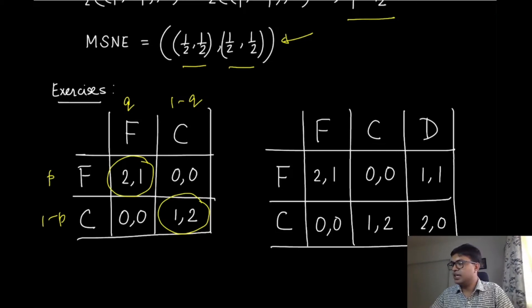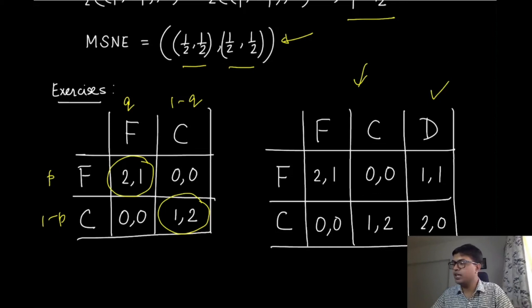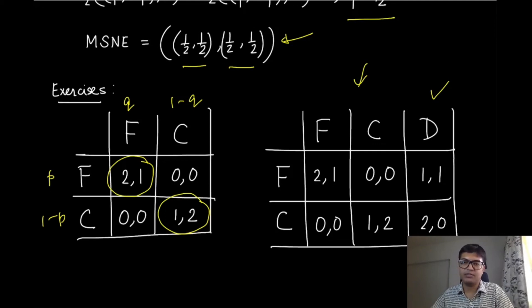The second exercise is a game formed by appending one additional strategy for player 2 with corresponding utilities. Try to find the mixed strategy Nash equilibrium for this extended game.